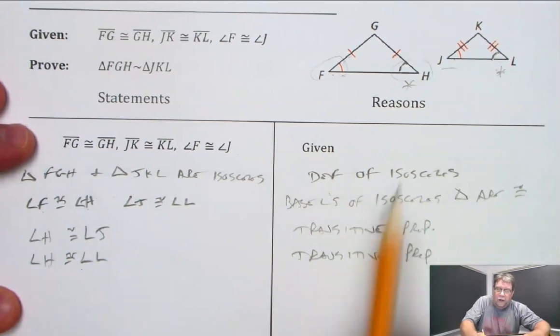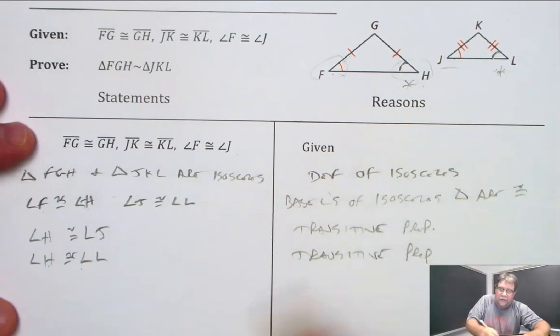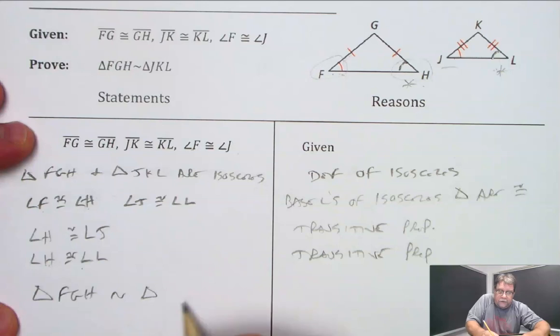And now that angle H and angle L are congruent, I can now say that triangle FGH is similar to triangle JKL.